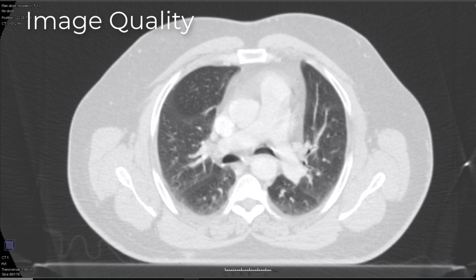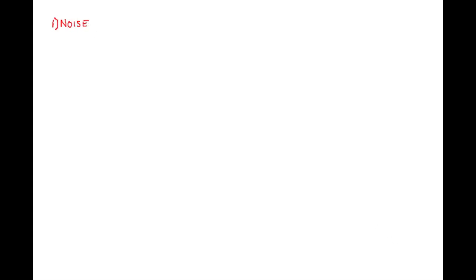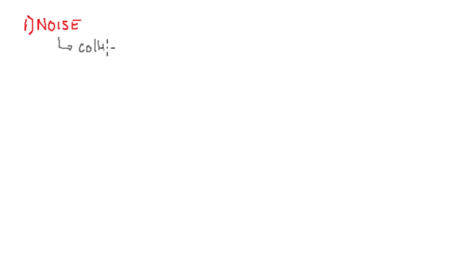Now I'd like to talk about image quality in CT scans. A lot of this is going to follow from the concepts in the last video, 19.1 — so if you haven't looked at that, go back and have a look first. Here are two images: the one on the left has more noise than the one on the right, but otherwise they're quite similar. Noise is our first parameter to look at in terms of image quality.